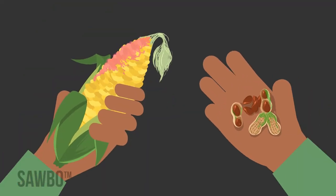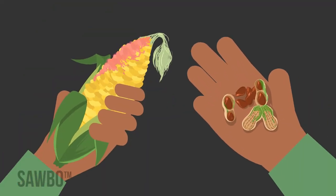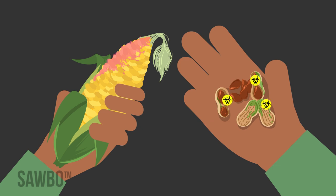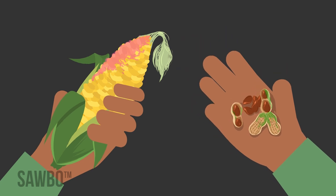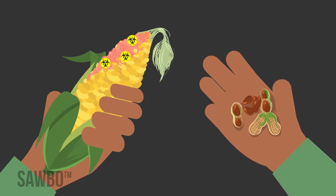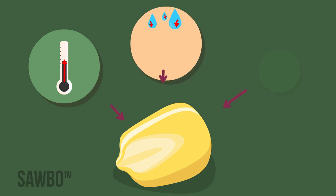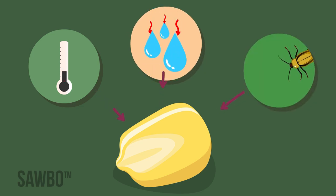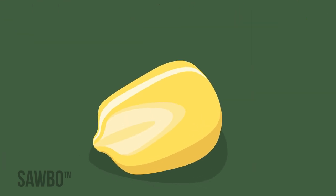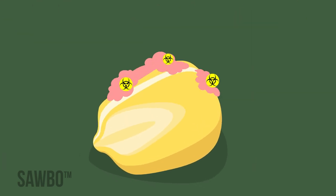Different molds produce different toxins. Some are called aflatoxins, others are called fumonisins. When temperature, moisture, and other conditions are right, molds can grow on crops or food and produce these toxins.